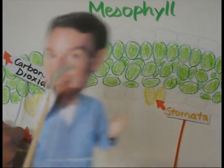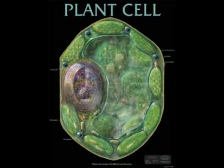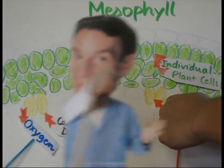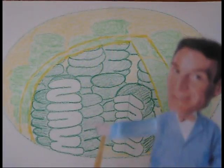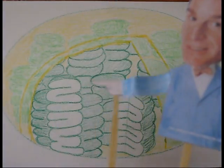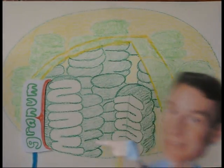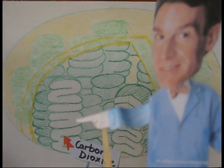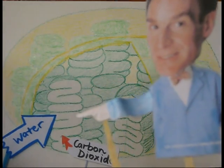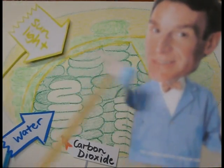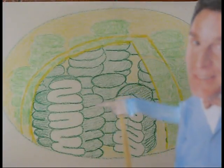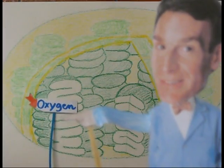These green blobs are individual plant cells. They're green because of the chloroplasts. In plant cells, there are organelles called chloroplasts. They consist of granum, which are made up of individual discs called thylacoids. Here, carbon dioxide is absorbed, along with water and sunlight, in a process called photosynthesis.